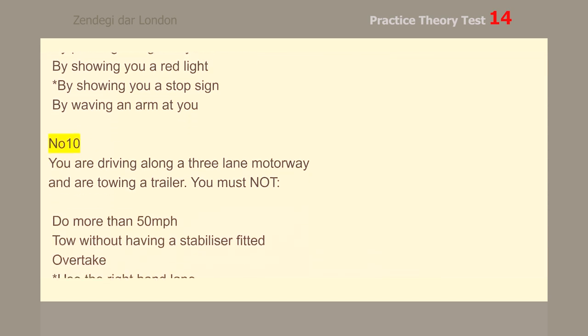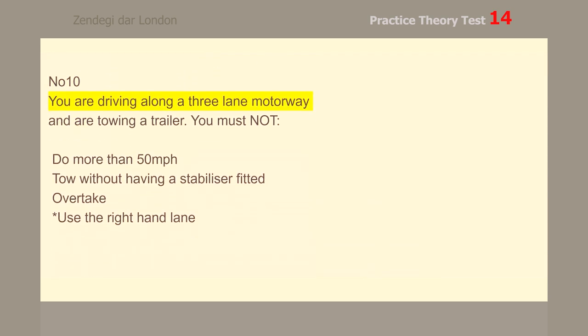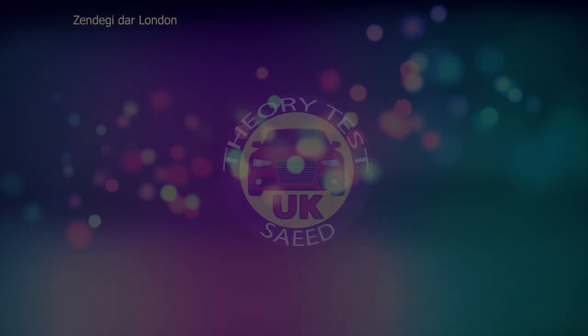Number 10. You are driving along a three-lane motorway and are towing a trailer. You must not use the right-hand lane.